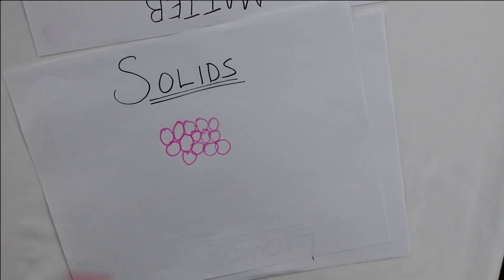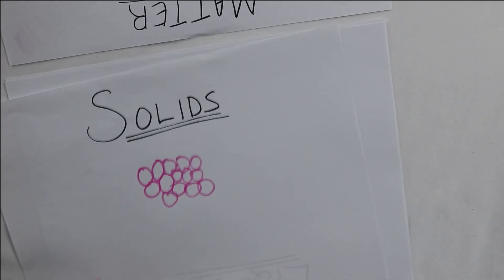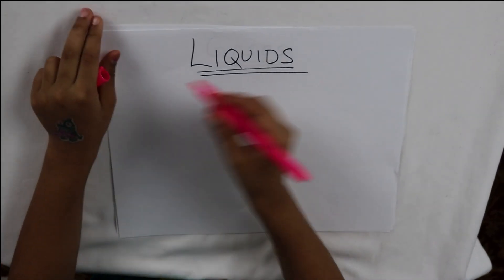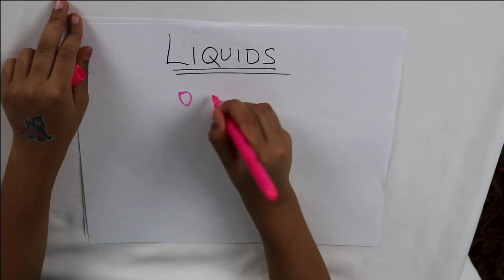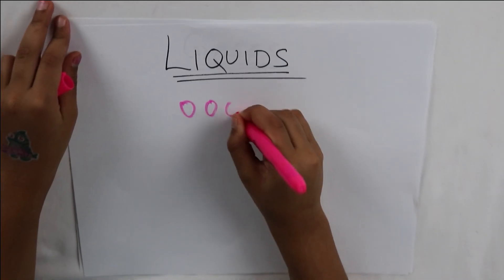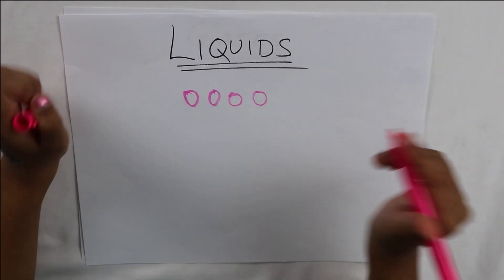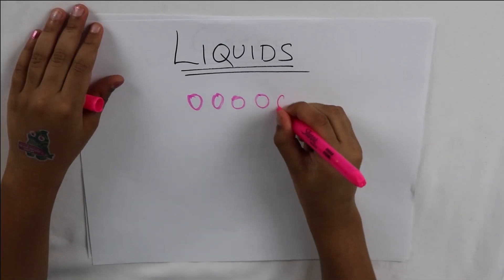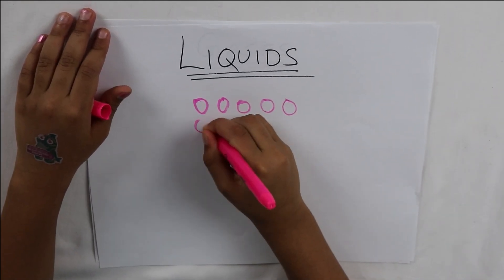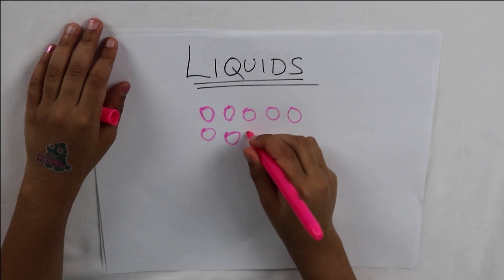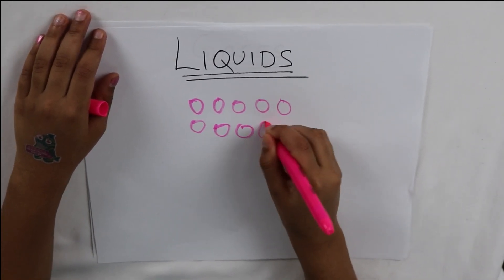Now what are liquids? In liquids, the molecules have a little bit of space but they can't move freely — they will bump into each other. Liquid can move, and liquid does not have its own shape because the molecules can move around a little bit.